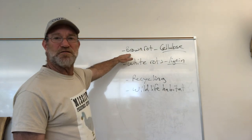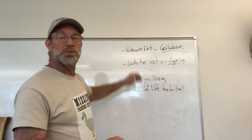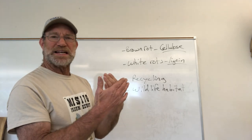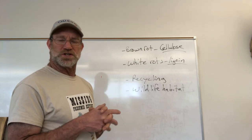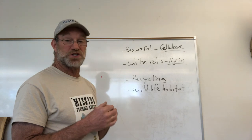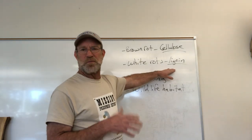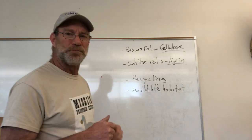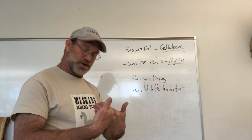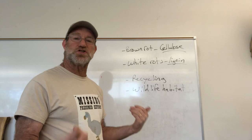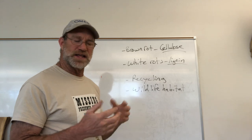Brown rots are those decays that feed on cellulose, and by virtue of feeding on the cellulose, they leave behind the lignin, which — you might remember from forest ecology — is what's binding the cells together. So it leaves this rich brown, lignin-rich residue, which is often cubical or crumbly in nature. The white rots are feeding on the lignin itself primarily, although they denature the cell walls as well, and they tend to peel apart or be stringy, forming little pockets or delaminating strings — you'll see that in some of the samples here.